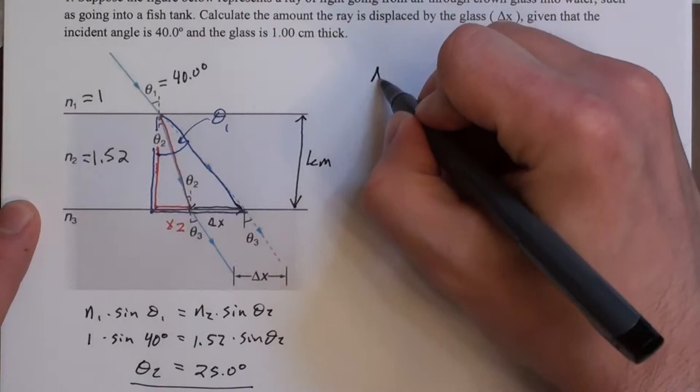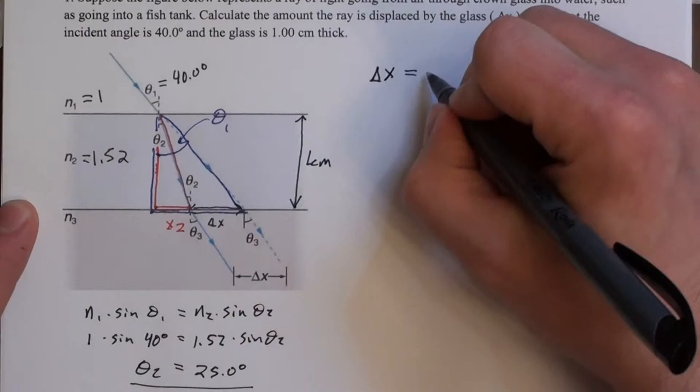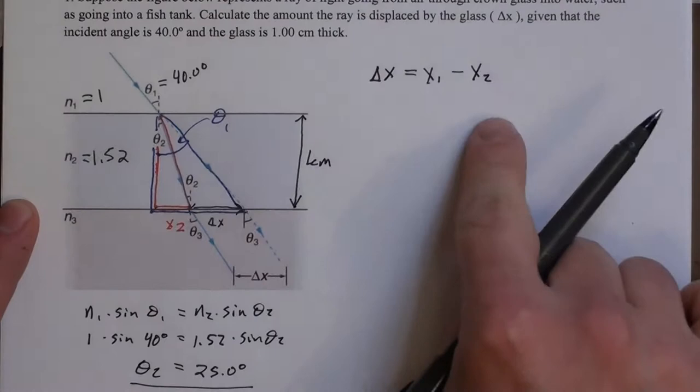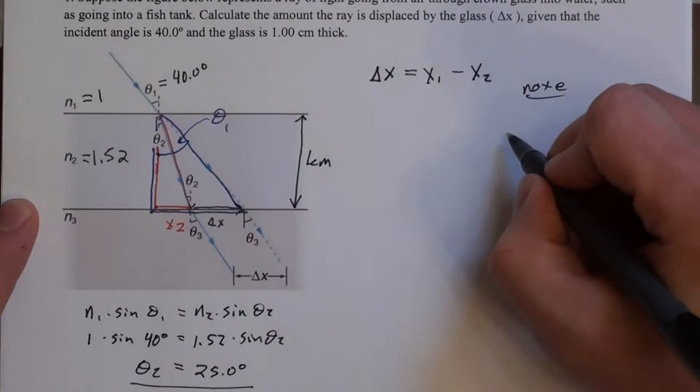And if you look at these triangles you can see delta x is the difference between x1 and x2. It's x1 minus x2. So how are we going to figure out x1 and x2? Well, if you notice these are right triangles.